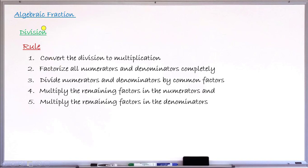Steps two through four are exactly the steps we took while multiplying two algebraic fractions, because the rule says: for division, you first change your division to multiplication. We already learned how to multiply two algebraic fractions in our previous lessons, so the problem of division is now converted to a problem of multiplication.